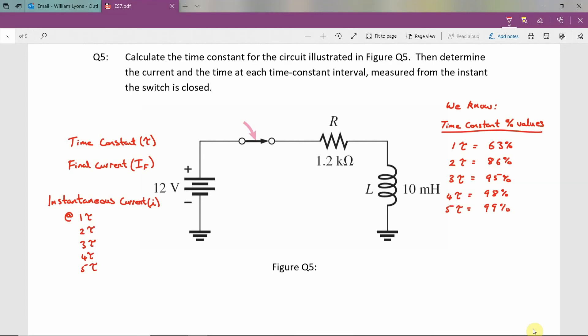We can note from the diagram that we're given the following. We have a voltage source Vs equal to 12 volts, we have a resistance R equal to 1.2 kilo ohms, and we have an inductance L equal to 10 millihenries.